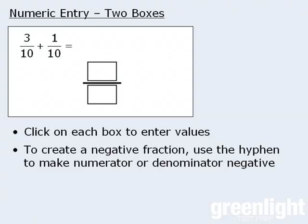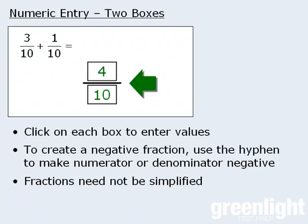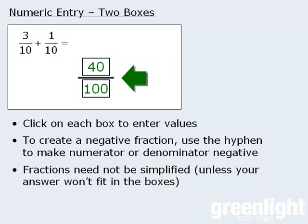For two box numeric entry questions it's important to note that you are not required to simplify your fractions. For example, it's perfectly fine to enter four-tenths as an answer here even though four-tenths is not a simplified fraction. Similarly, it would be acceptable to enter 40 over 100 as an answer as well. Just keep in mind that there may be instances in which the test makers have limited the size of the numbers that will fit inside the boxes. For example, it's unlikely that the fraction forty thousand over one hundred thousand would fit inside these boxes in which case you would need to simplify the fraction.